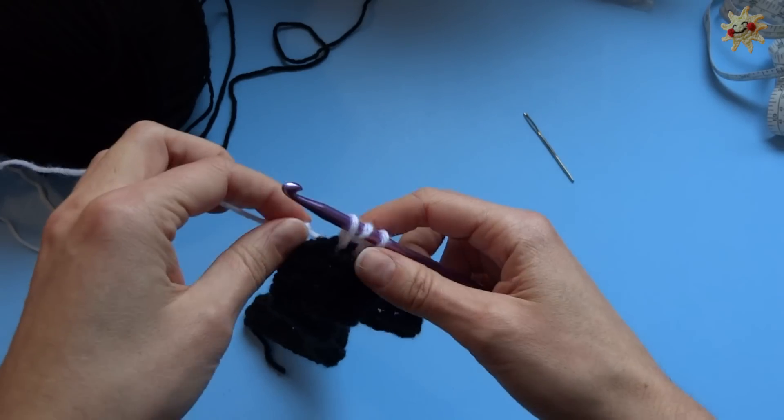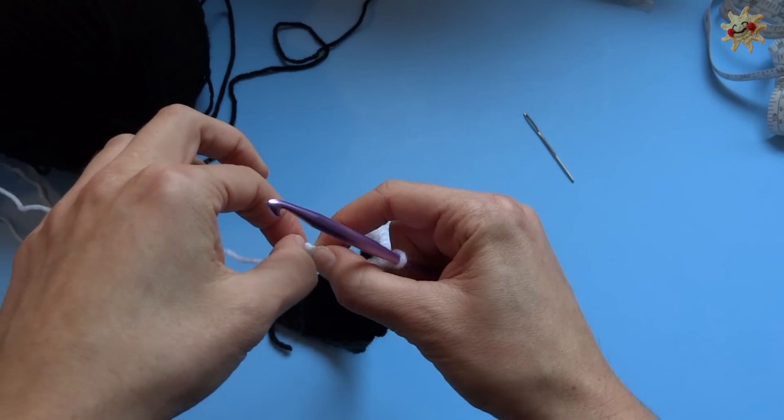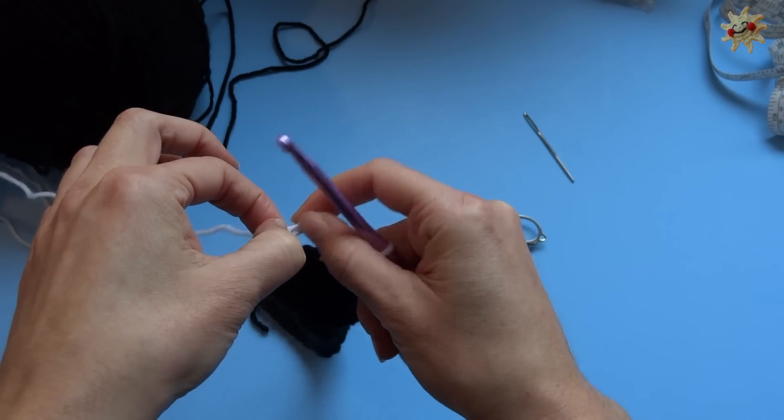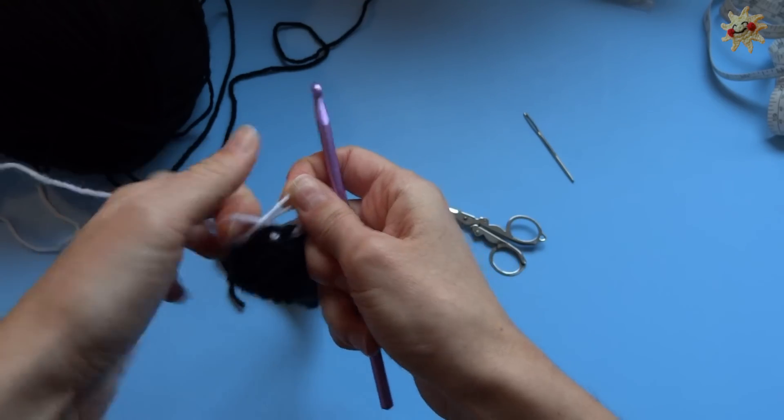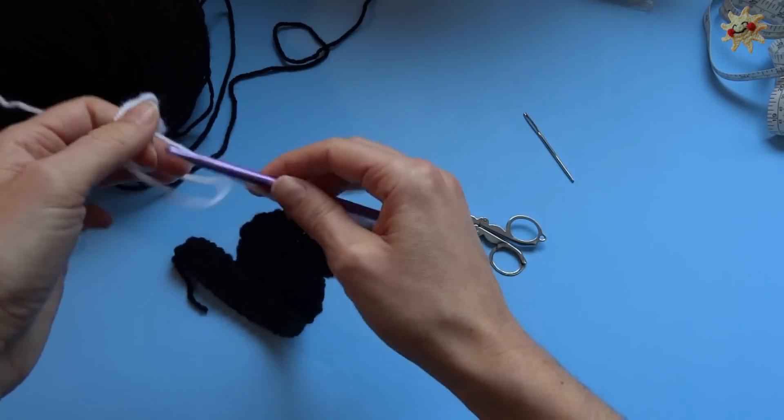So each stripe consists of two rows of half double crochet in each color. So you go all the way down and then you go all the way back up again. And I've got a knot here in my yarn. How do you like that?